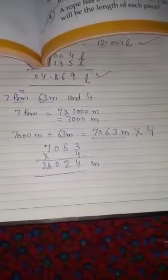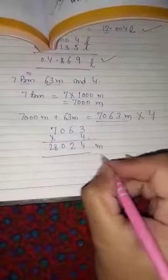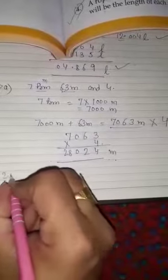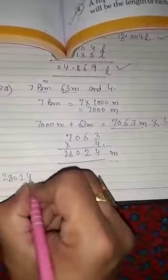Now, we want to convert into bigger unit. Bigger unit is kilometer. 28,024 meter.